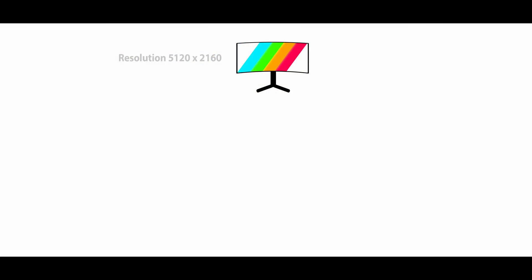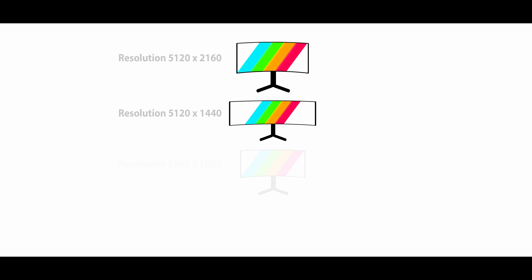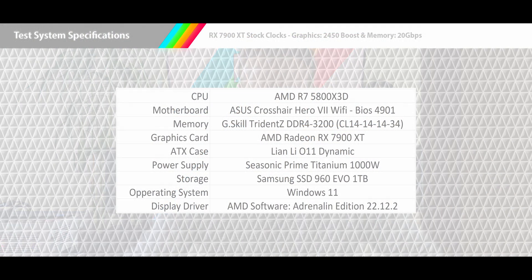Those resolutions are 4K ultrawide, 1440p super ultrawide, 1600p ultrawide, and 1440p ultrawide. The test system specifications are: AMD R7 5800X 3D CPU, Asus Crosshair Hero 7 Wi-Fi, G.Skill Trident Z DDR4-3200 CL14 at 32GB, a Seasonic Prime Titanium 1000W power supply, a Samsung SSD 960 EVO 1TB, Windows 11, and AMD Software Adrenaline Edition 22.12.2.